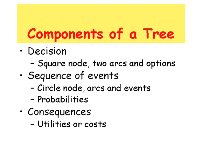These events are displayed as a circle node with arcs pointing out the occurrence of the event. Typically on these circle nodes, we display the probabilities of each one of the events occurring. The last component displayed on a decision tree are the consequences, displayed as either utilities or costs associated with different pathways in the decision tree.